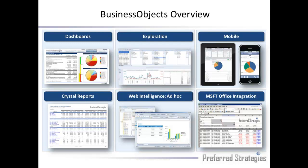We'll talk a little bit more about what a semantic layer is. Business Objects is great there. If you want to put some dashboards in front of some executives, provide them some analysis capabilities and data mining functionality, or want to start distributing information via mobile devices, iPads, and tablets, Business Objects is perfect.